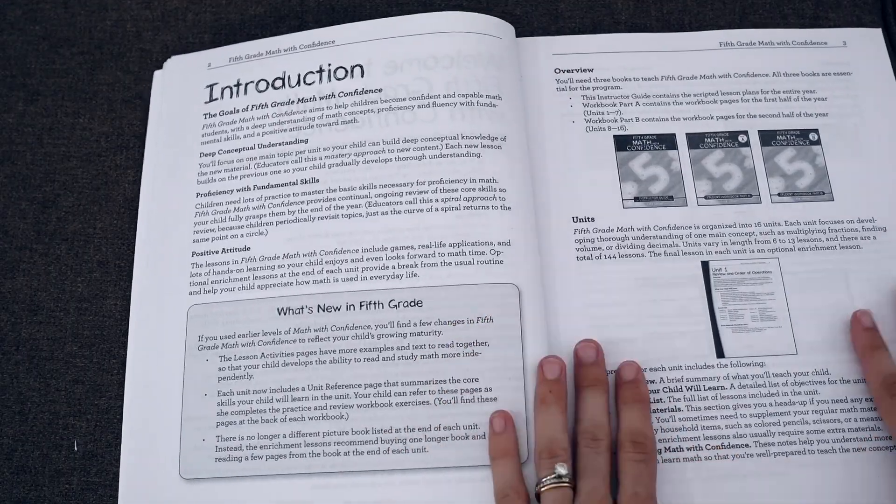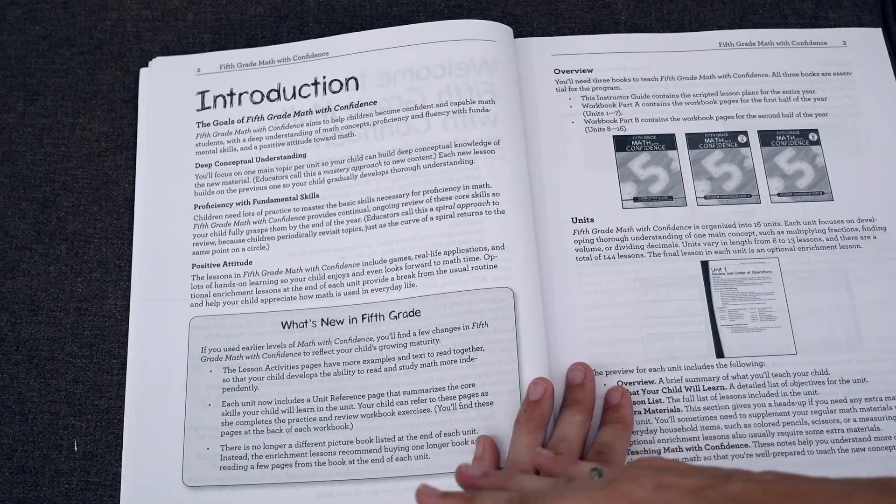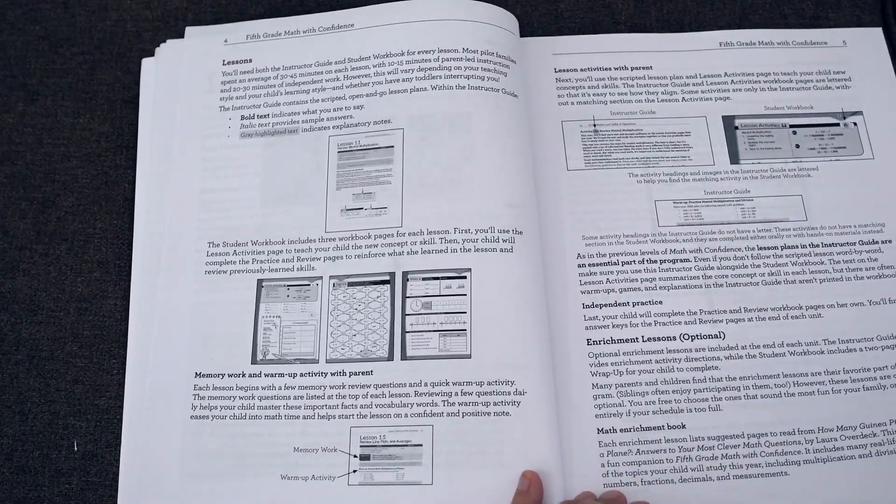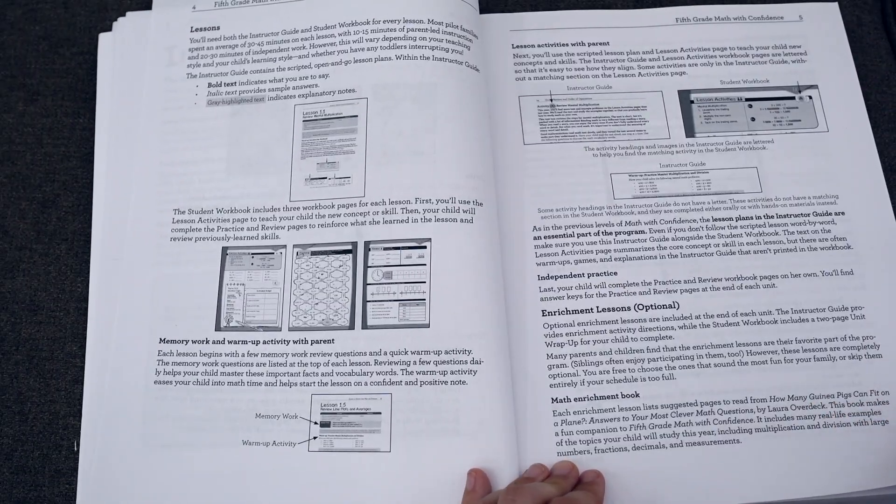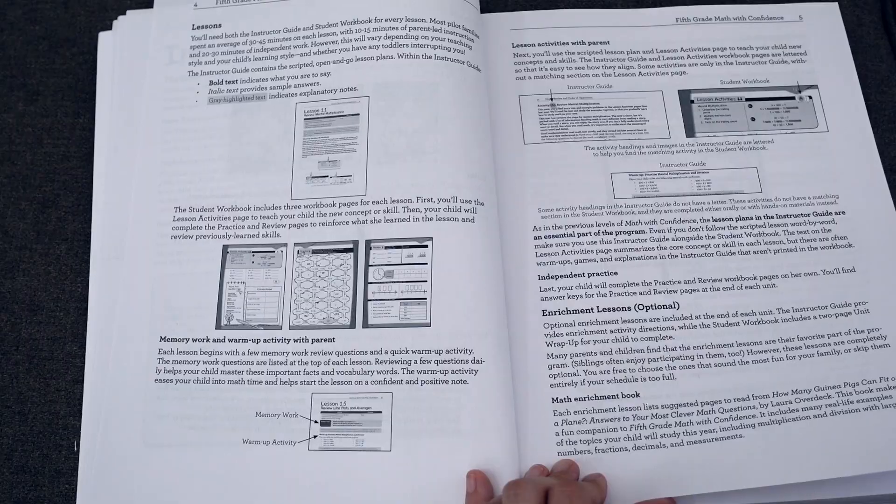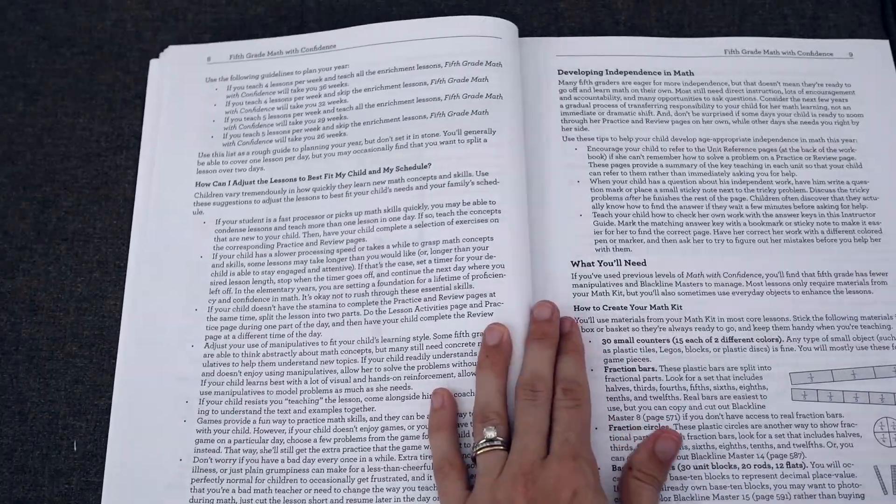Another difference is that you no longer have a whole list of picture books. Instead, there is one book that is used throughout the year for the enrichment lessons. Just one book, which is called How Many Guinea Pigs Can Fit on a Plane? Answers to Your Most Clever Math Questions. And so you're just reading a few pages of that book each enrichment lesson.